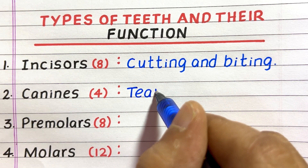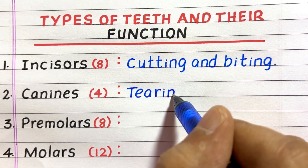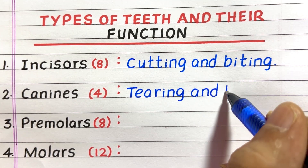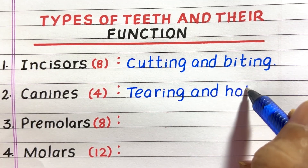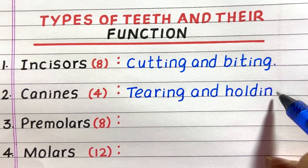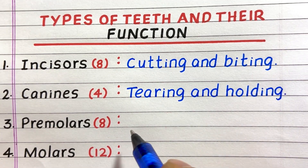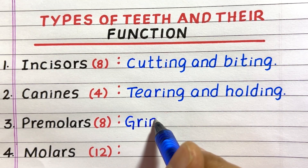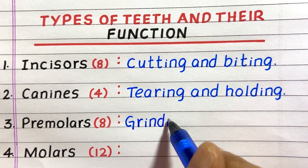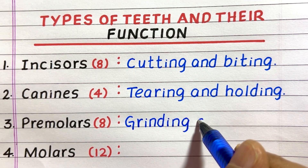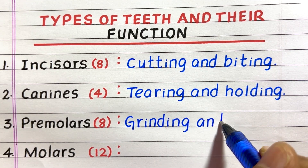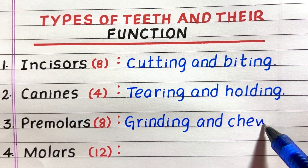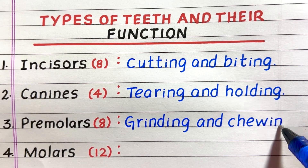The second type is canines — four in number — and their function is tearing and holding. Third, there are eight premolars, and their function is grinding and chewing.